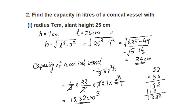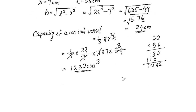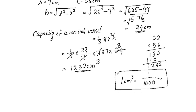Now we convert to liters. Since 1 cm³ = 1/1000 liter, we divide 1232 by 1000 to get the answer in liters: 1232 ÷ 1000 = 1.232 liters.